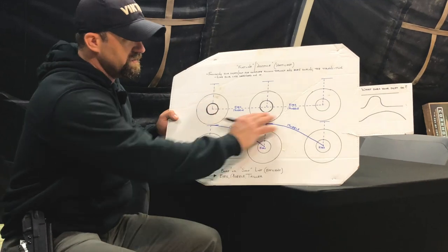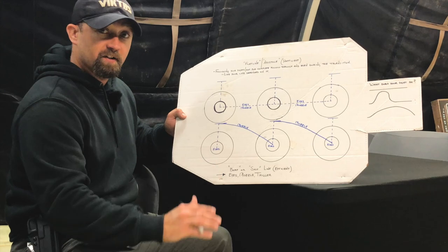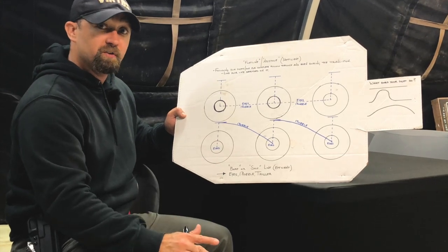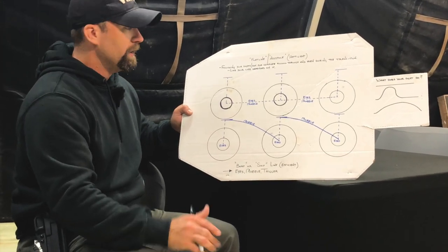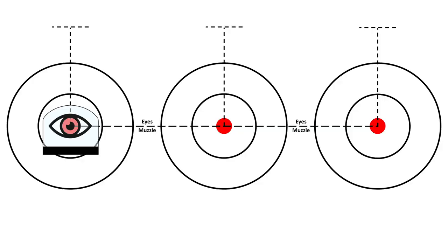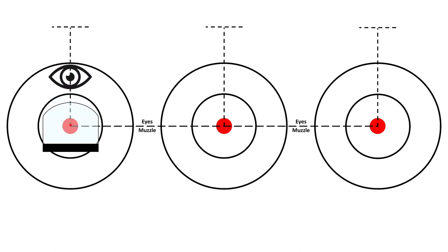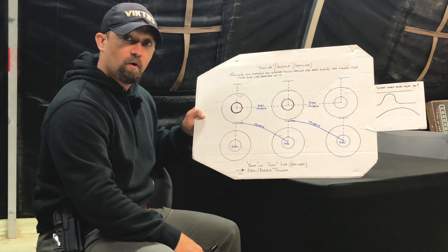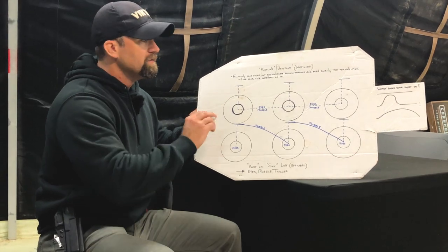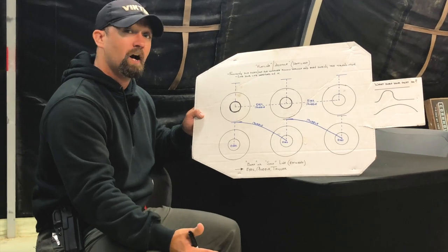What we've got here on this top version is what I call the flatline, or asystole, way of transitioning the gun. This is something you see very commonly with people that are learning. Basically, you have the target in the center, and what people do is shoot — the gun goes bang, comes back down, gun goes bang, comes back down. Even though they're shooting two shots, they took three sight pictures on this one target. The eyes and muzzle stay together here — this is done on purpose.